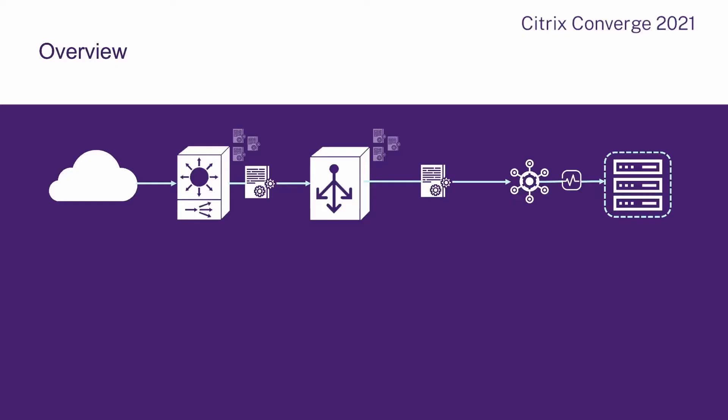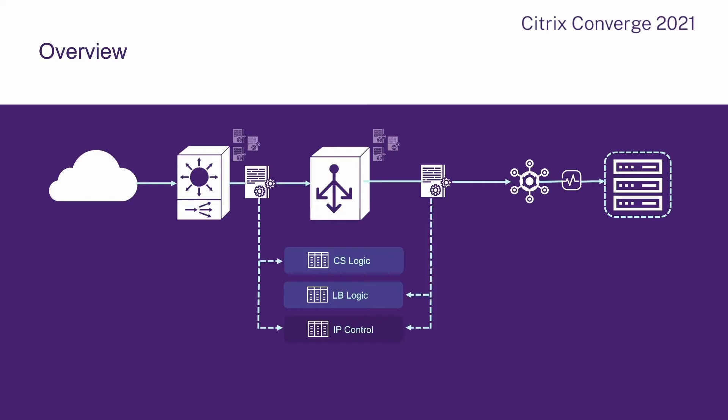So what is CoreLogic framework? Let's dive into the rabbit hole. Traffic comes in from the left, hitting a content switching virtual server where a set of policies determines which load balancer to use. On that load balancing virtual server, we can have policies evaluated before sending traffic through service groups to the real backend servers. CoreLogic is a predefined set of logic on the content switching virtual server to determine which load balancer to use, and it incorporates IP address controls for ACLs on traffic. In short, CoreLogic is a routing framework for applications within Citrix ADC.